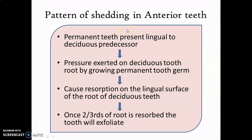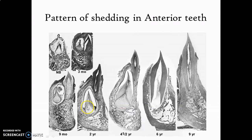Now let's see what are the patterns of shedding. It differs between anterior and posterior teeth, because anterior permanent successor teeth — that is, permanent canines and incisors — are located lingual to their primary predecessors, and posterior teeth, that is the premolars, are located between the roots of primary molars, as I have discussed already in the video of tooth eruption. So in anterior teeth, the permanent tooth germ is located lingual to the root of its primary predecessor tooth.